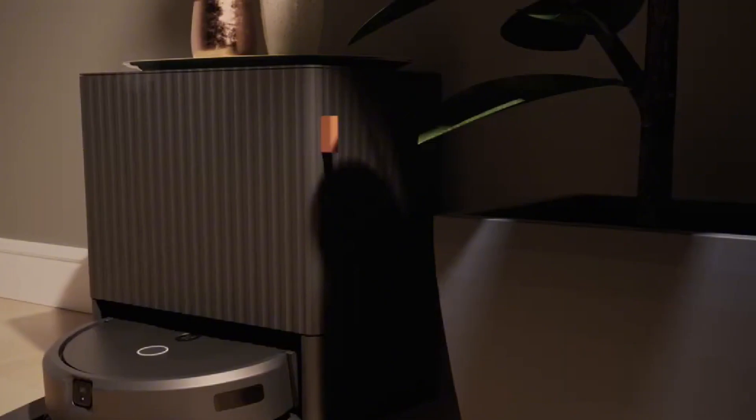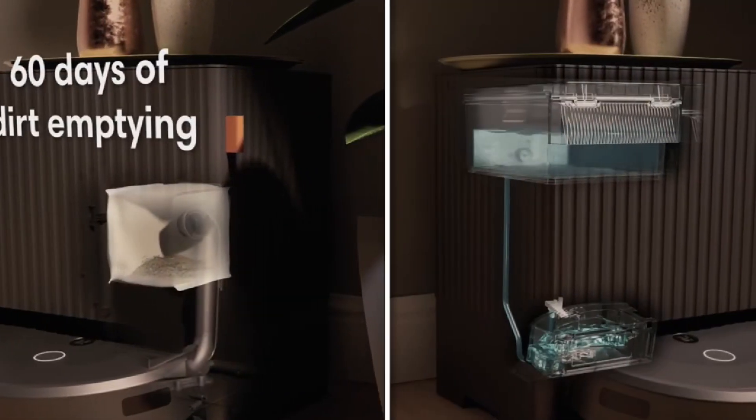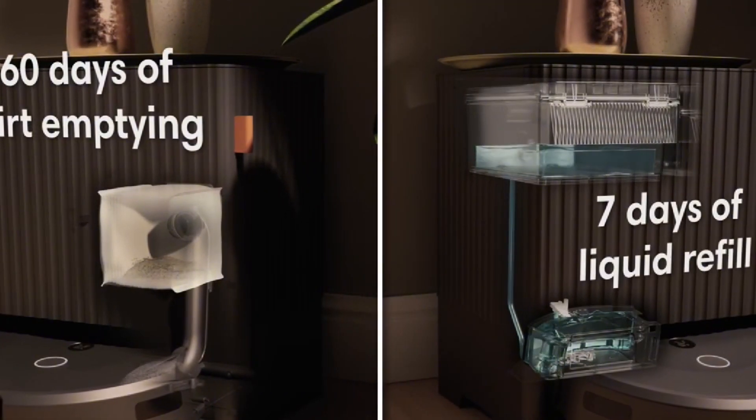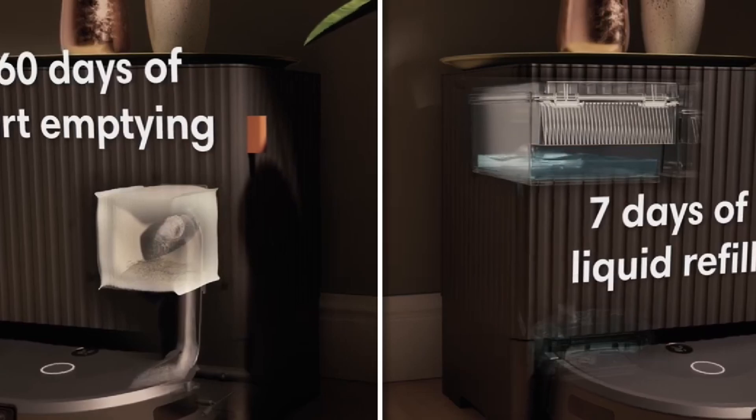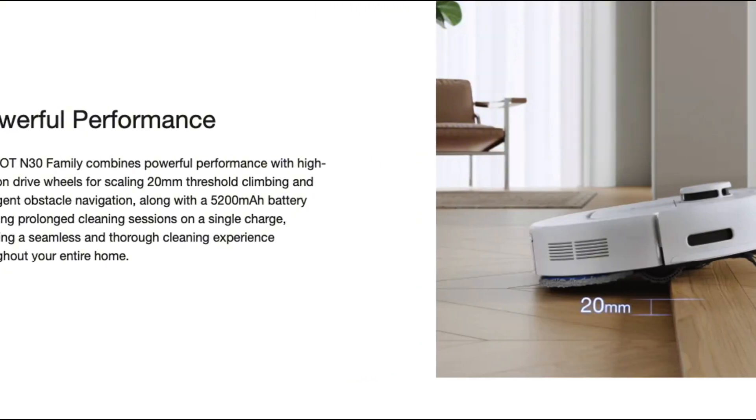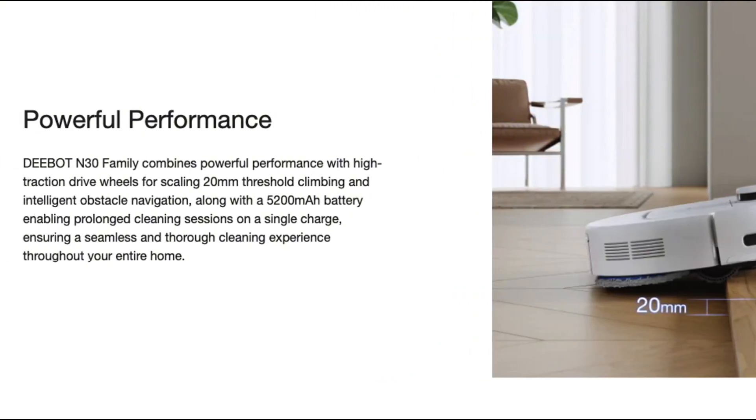Battery life is another crucial factor to consider. The Roomba 10 boasts a battery that can last up to 90 minutes, which is typically sufficient for average-sized homes. The D-Bot T30, however, offers comparable battery life with the ability to recharge and resume cleaning, making it more efficient for larger spaces.